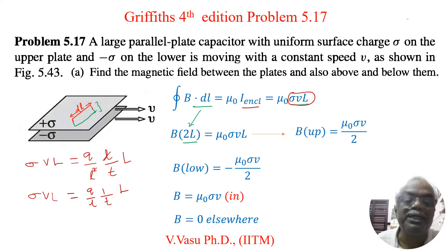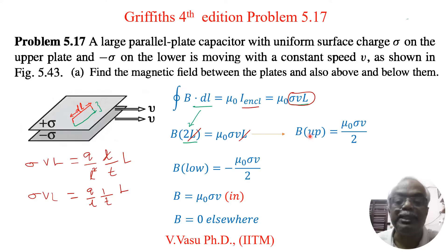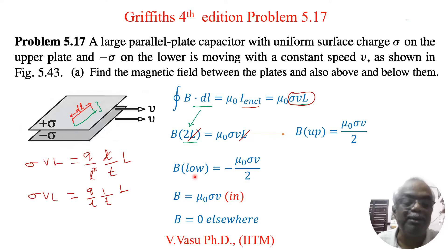The left-hand side is B multiplied by 2L, and the right-hand side is mu-naught sigma VL. So the L's cancel and B for the upper plate equals mu-naught sigma V divided by 2. Similarly for the lower plate, using minus sigma, this becomes minus mu-naught sigma V divided by 2.